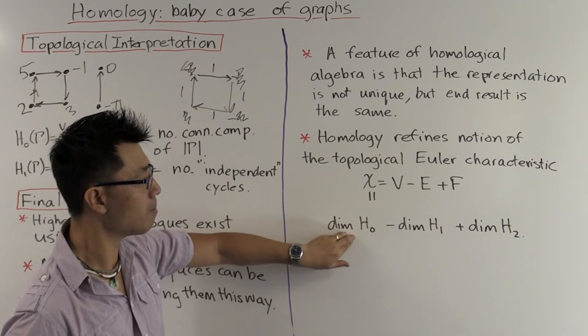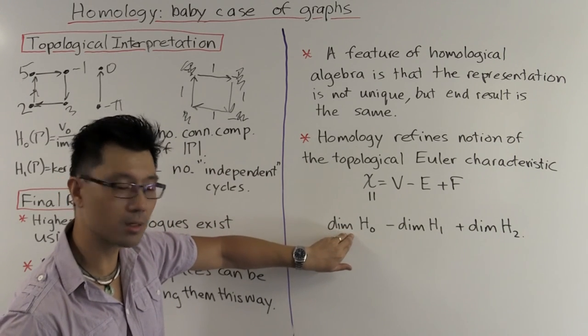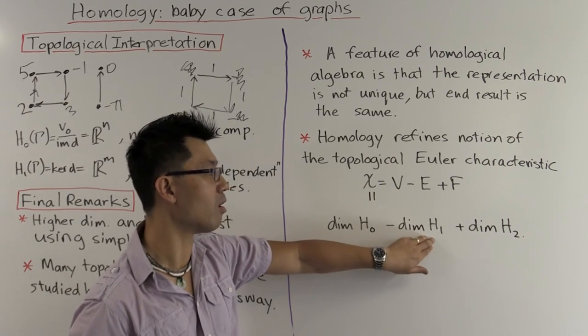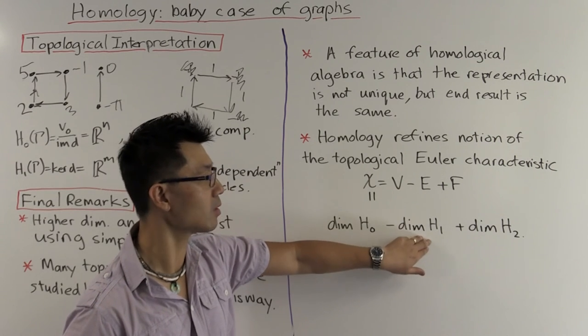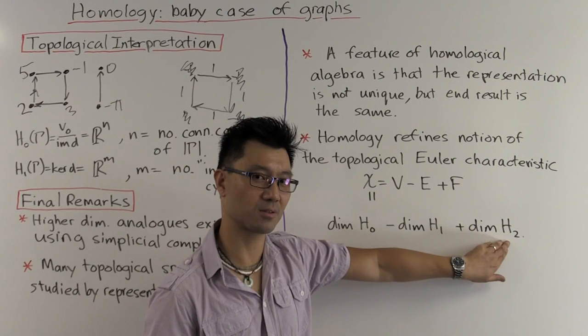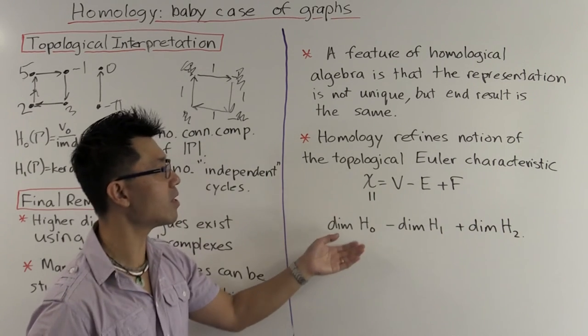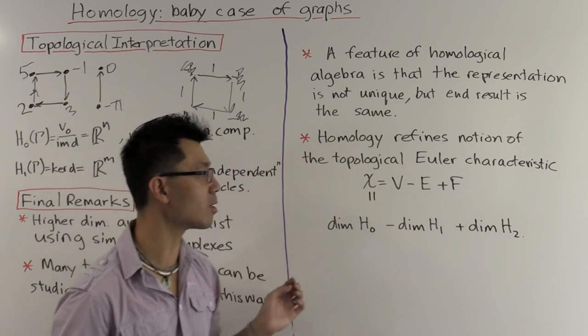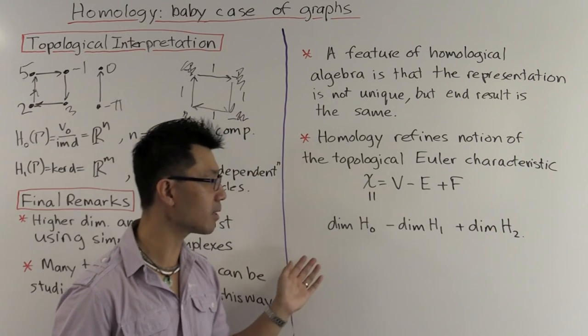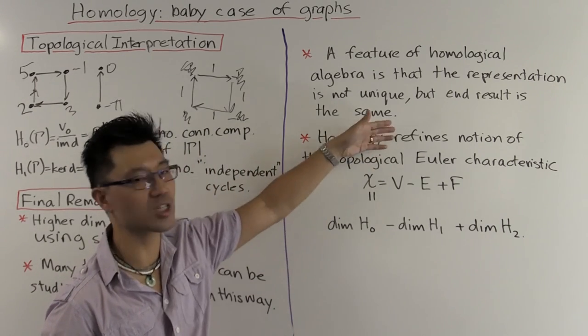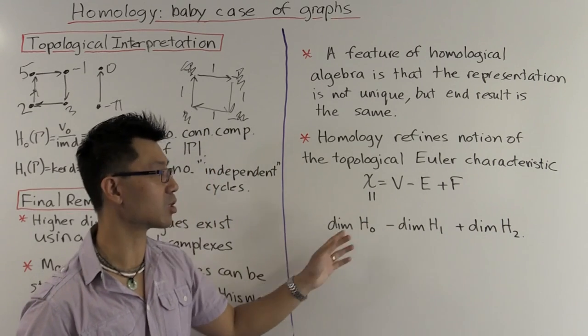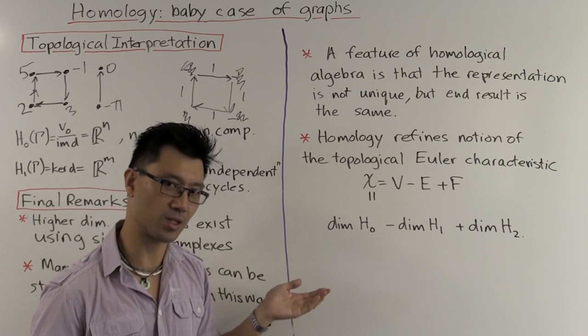And each of these contains topological information. This one still measures somehow the number of connected components. This one still measures somehow the number of one-dimensional cycles. And this one now measures, in some sense, the number of two-dimensional cycles. So it's in this way that this topological Euler characteristic now can be refined into more topological invariants, which have direct meaning. And also, it's no longer just a number. These are actually vector spaces. And that means that you can apply more results from linear algebra to try to study them.